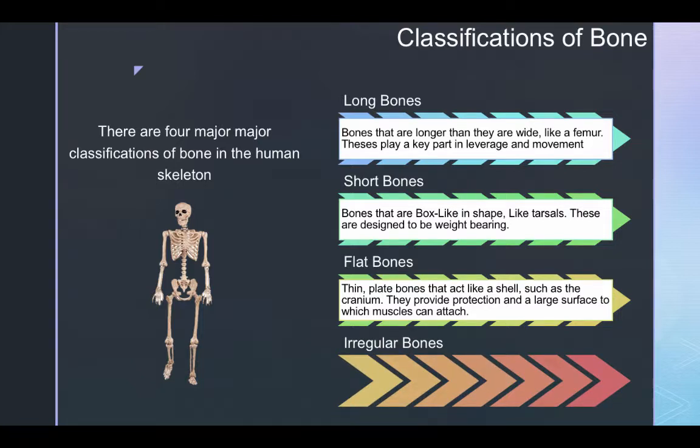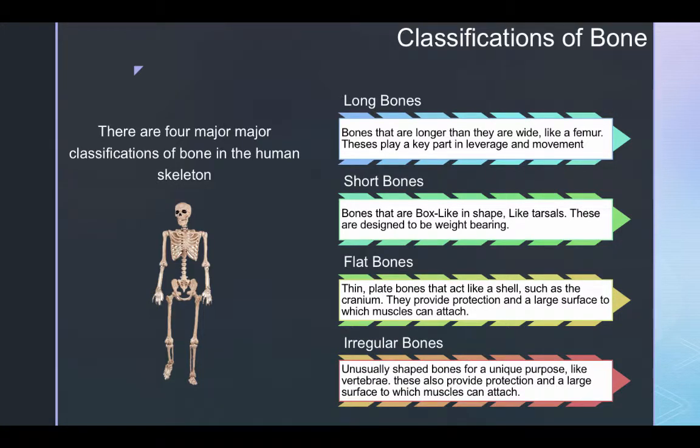Irregular bones are unusual shaped bones for unique purposes, like vertebrae. These also provide protection and a large surface to which muscles can attach.